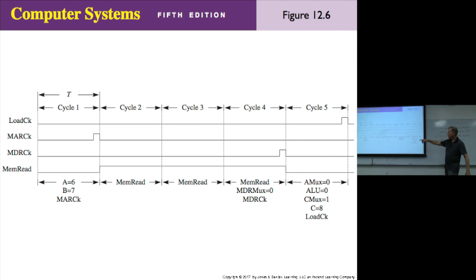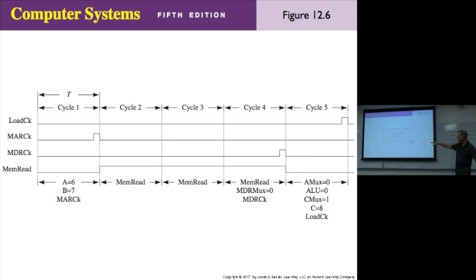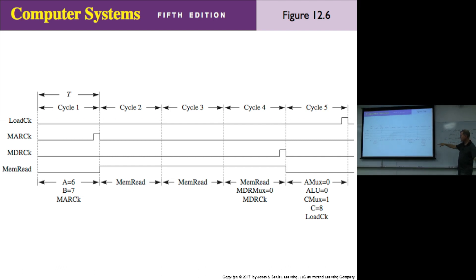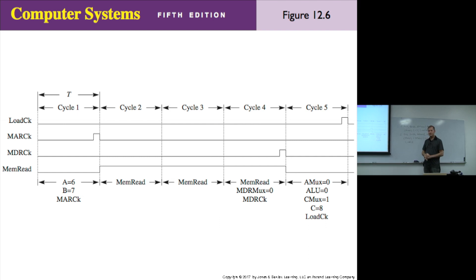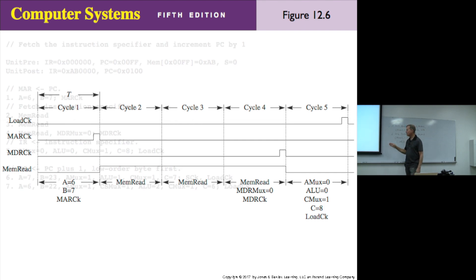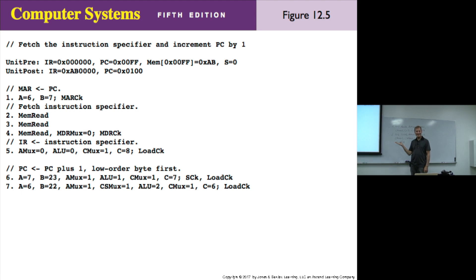Then memory read is asserted for three cycles in a row — cycles two, three, and four. At the end of cycle four, MDR MUX equals 0 and MDR clock stores the data. Then on cycle five, AMUX equals 0, ALU equals 0, CMUX equals 1, C equals 8, load clock. That's how these microcode programs work. If you look at figure 12.5, it looks like a program — it is a program.